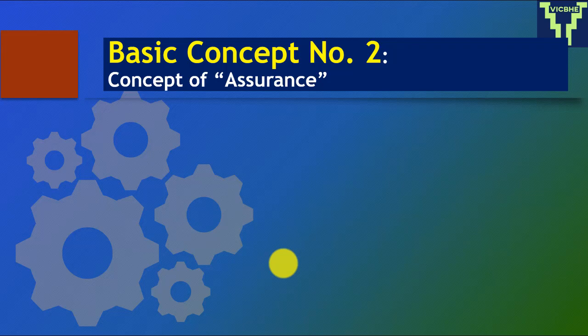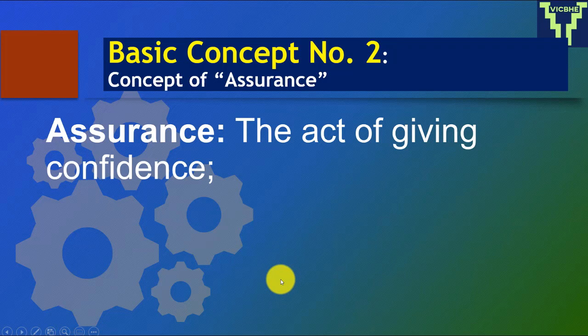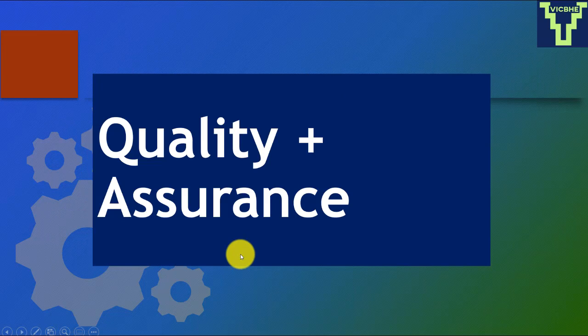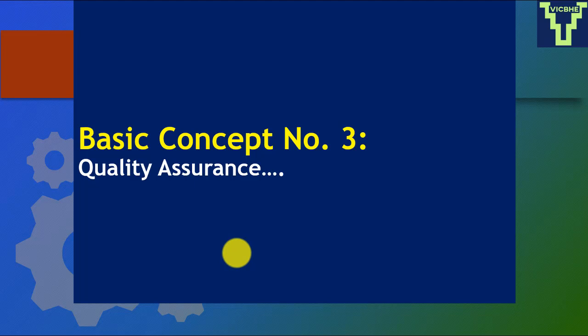Now let's go to the second basic concept: assurance. Assurance is the act of giving confidence — assuring that something is going to happen — or the state of being certain about an event or phenomenon. That takes us to the third basic concept: quality assurance.